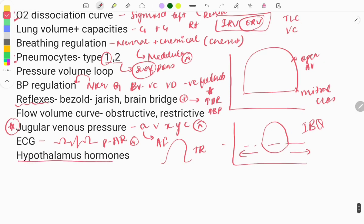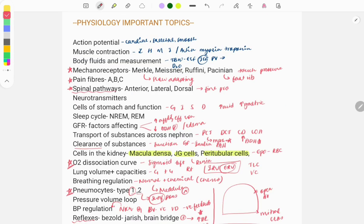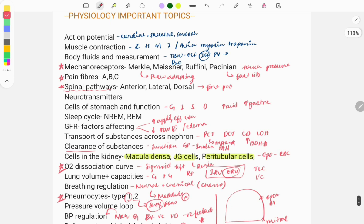Hypothalamus hormones: apart from endocrinology, you need to know the hormones secreted from the hypothalamus — like GnRH, growth hormone releasing hormone, and inhibitory hormones — and how they act on the pituitary. The pituitary then releases certain hormones. You need to know the whole pathway and how certain hormones act by feedback mechanisms, including the function of ACTH acting on the adrenal gland, insulin, and thyroid hormones.